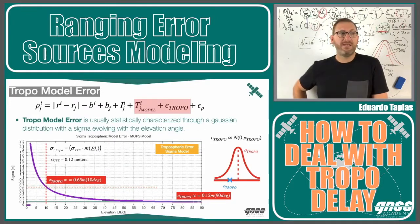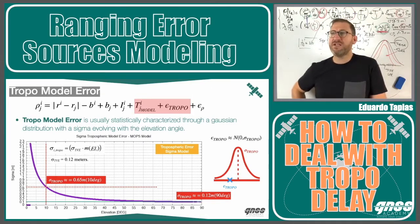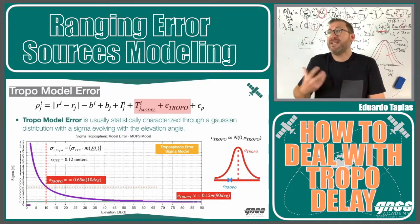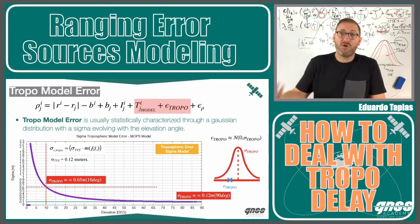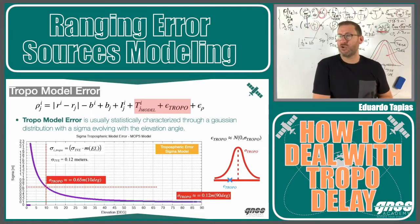This is the zenith tropo delay evolution for Toulouse along one day, shown for every satellite. Once you apply this kind of model, the residual error evolves with the elevation of the satellite. At higher elevation, the model error is lower — around 12 centimeters sigma. At low elevation, it can go up to 2.2 meters sigma. With a mask angle of 10 degrees, the tropo sigma is around 65 centimeters. For non-precision applications 12 centimeters is acceptable, but for precision applications it is too much — that's why we need to estimate the troposphere rather than just model it.